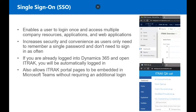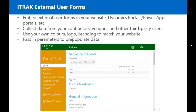The next feature related to the new authentication is single sign-on, which enables a user to log in once and access multiple company resources, applications, and web applications. This increases security and convenience because users only need to remember a single password. If you're already logged into Dynamics 365 and you open iTrack, you'll be automatically logged in, saving you from having to log in multiple times. This feature also allows iTrack portal pages to be embedded into Microsoft Teams without requiring an additional login.